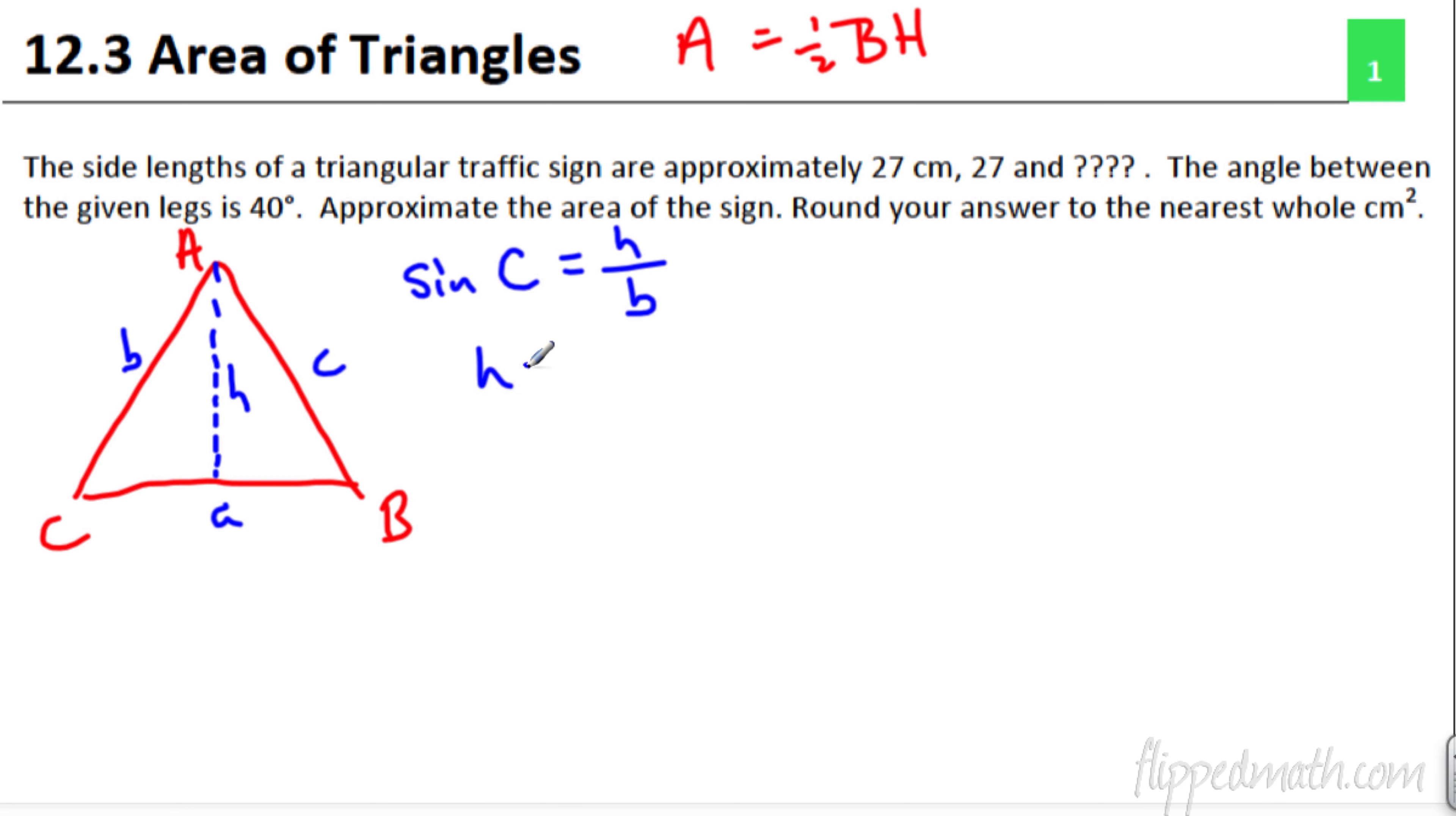I'm going to call this side little b, little a, little c. So it would be h over b. That's the sine of C. We're going to cross multiply. h is going to equal b times the sine of C. This works for every triangle. So now we're going to go back up to our formula right here. Area equals one half base times height. The base is actually A, and then the height of the triangle is B times the sine of C. Hey, look what we just did. We created a brand new formula that can find the area of any triangle.